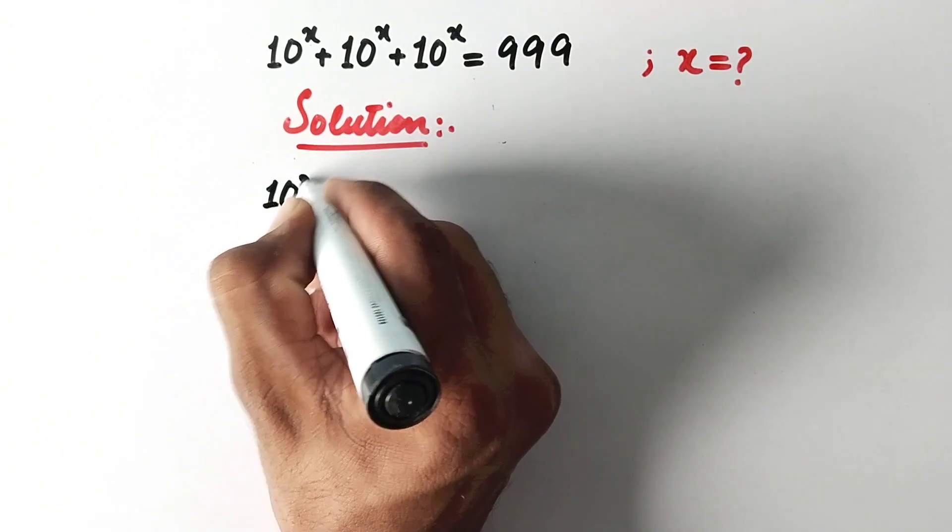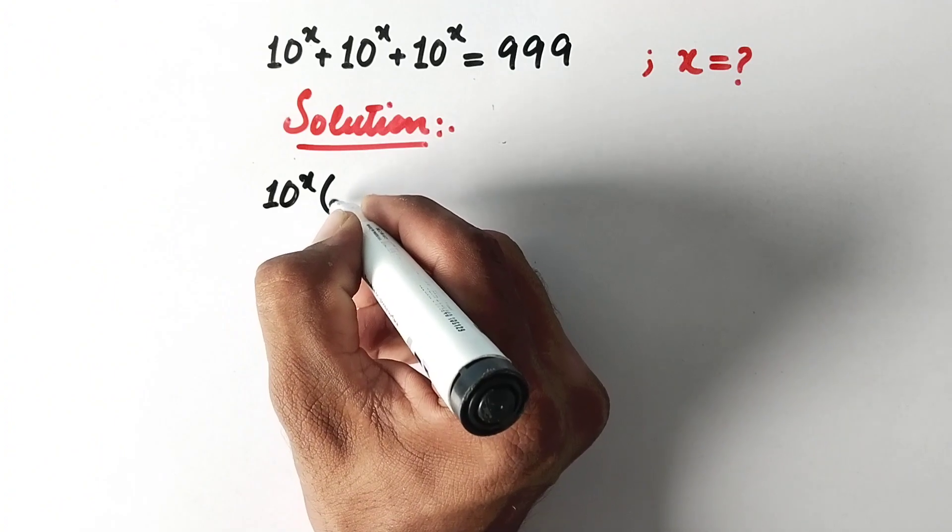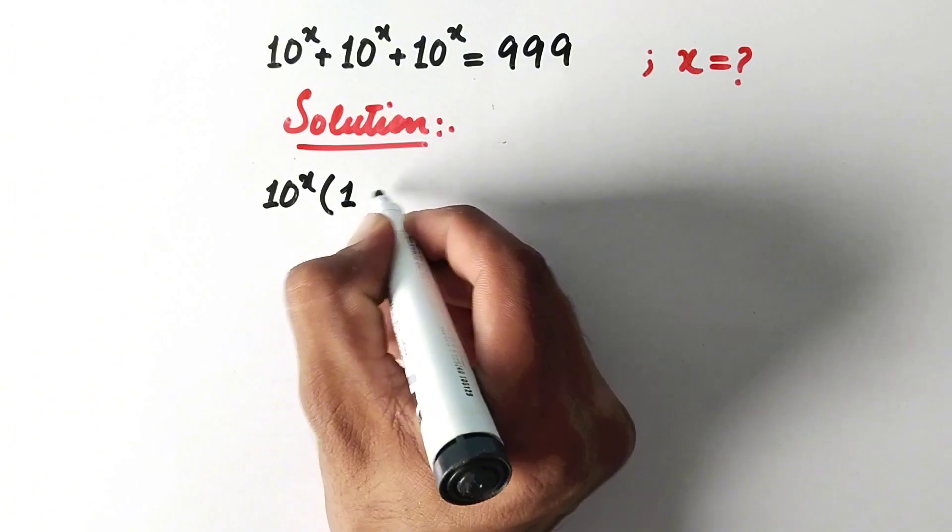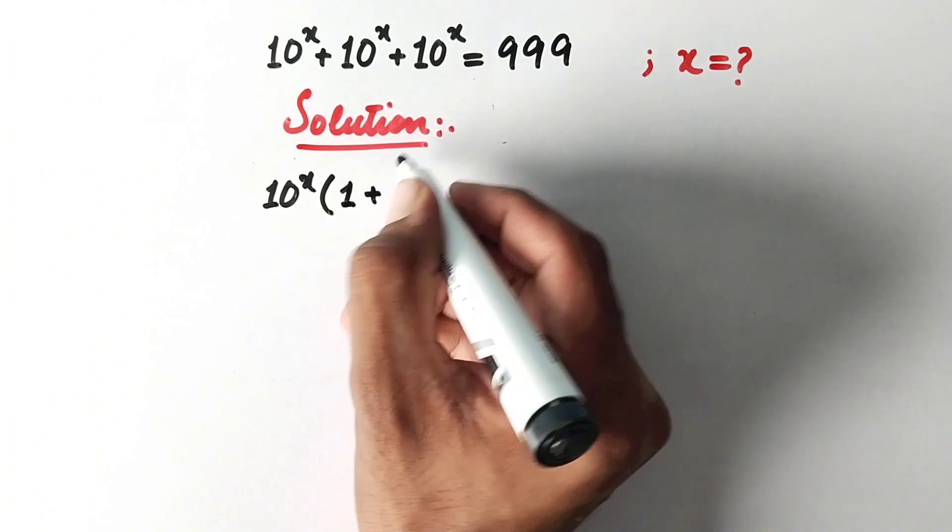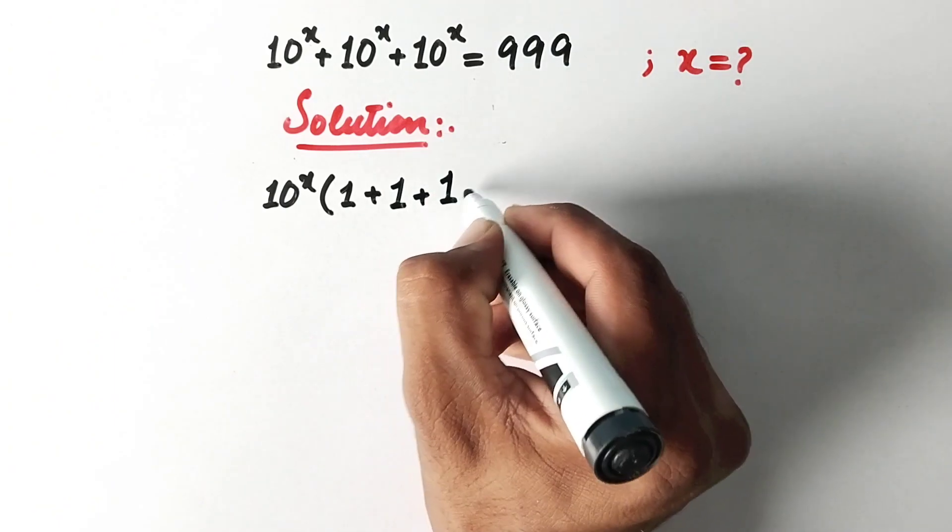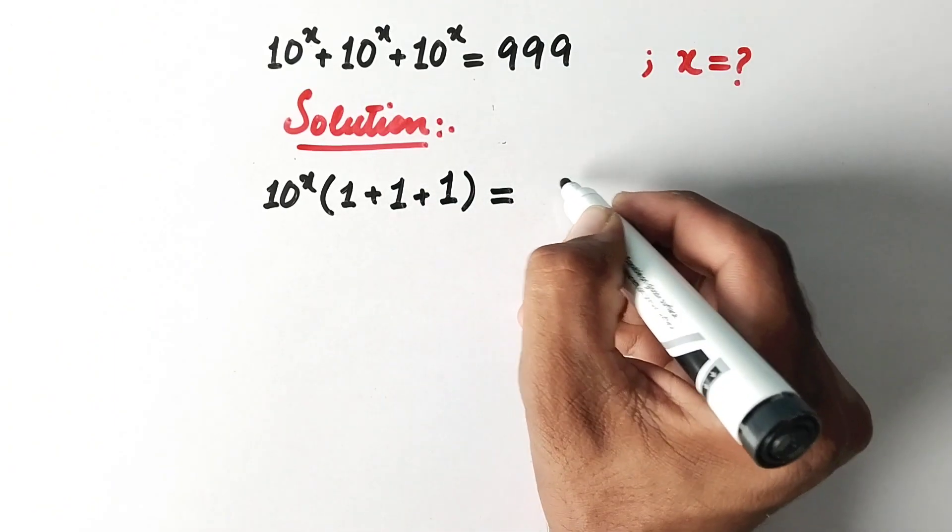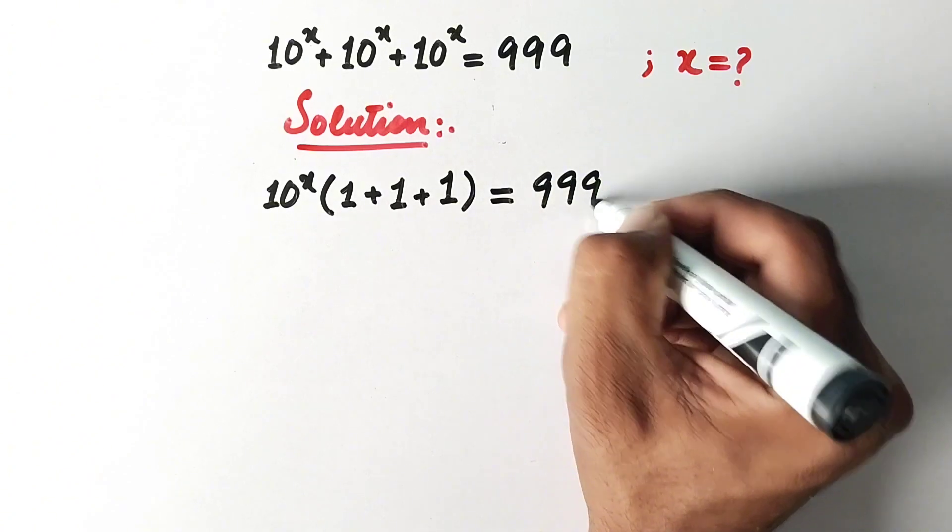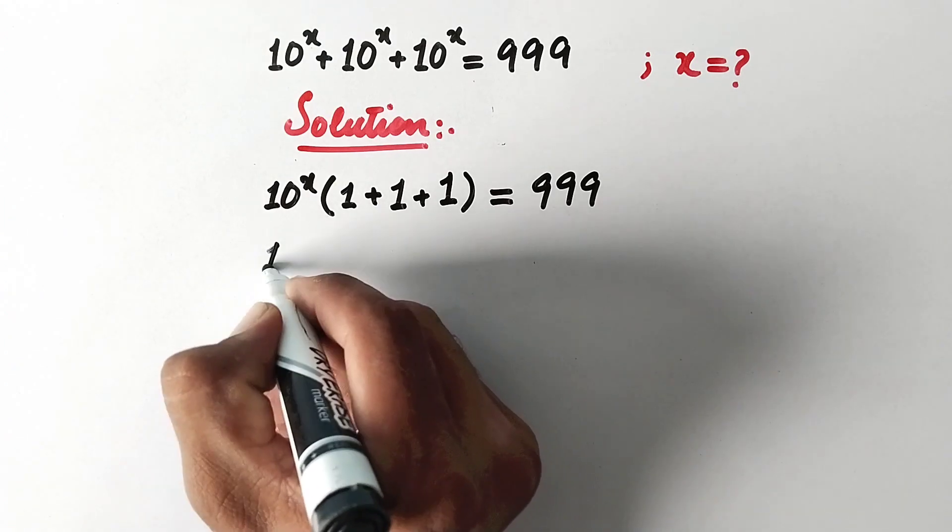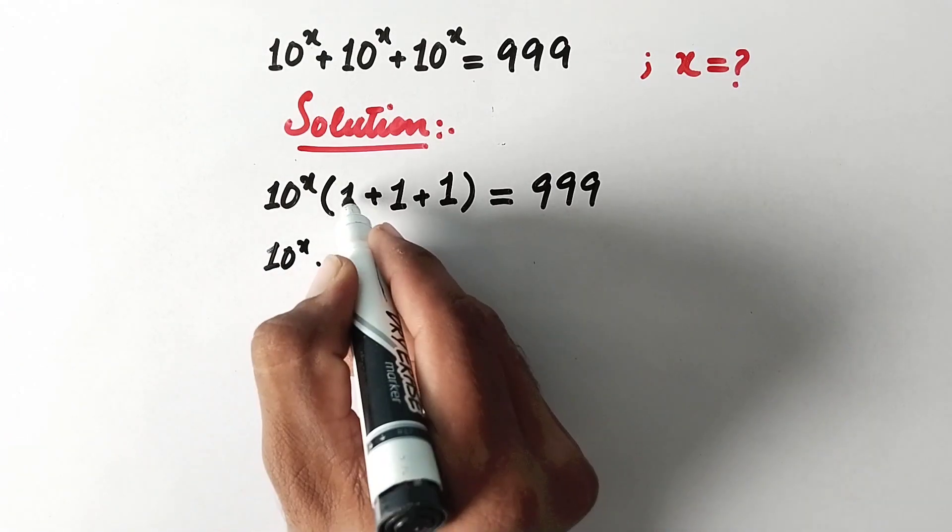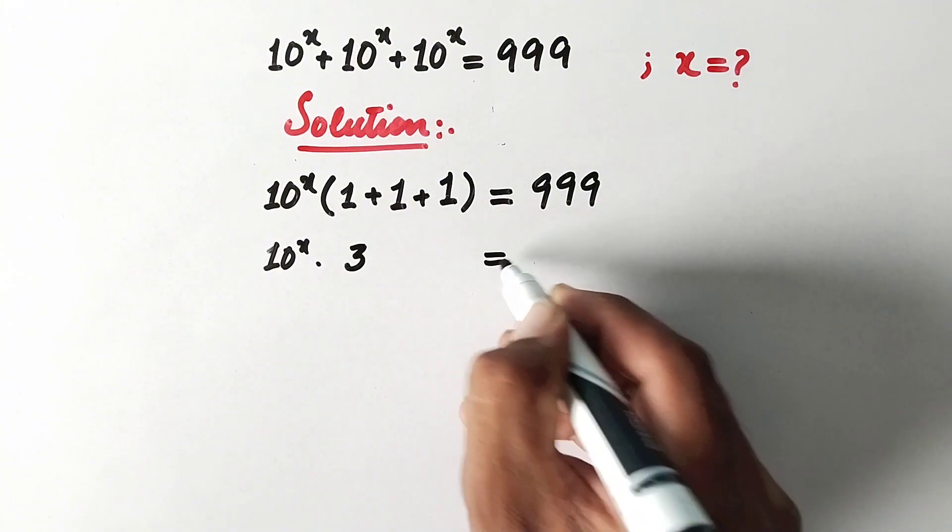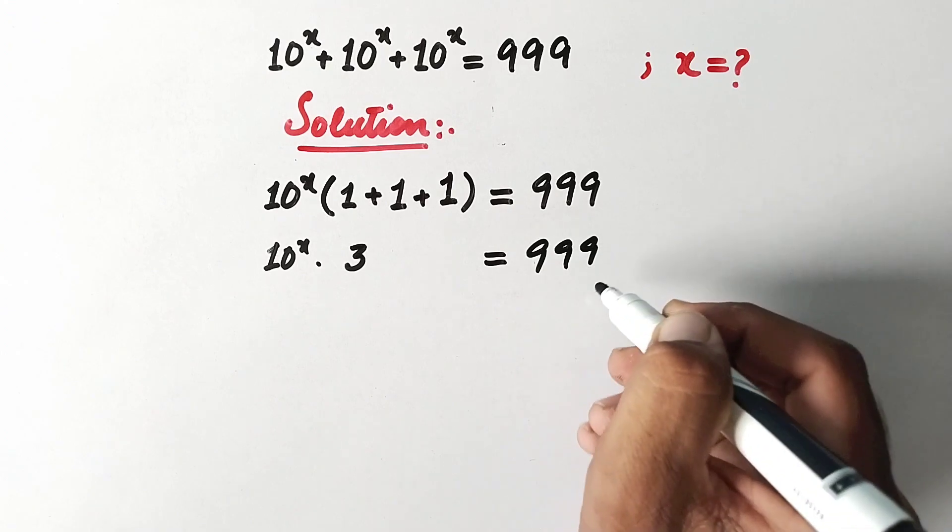So there will be 10 to power x as common. So here 10 to power x divided by 10 to power x equals 1, plus here also 1, and here is also 1. That equals 999. So the next step will be 10 to power x times 1 plus 1 plus 1 equals 3, and that equals 999.